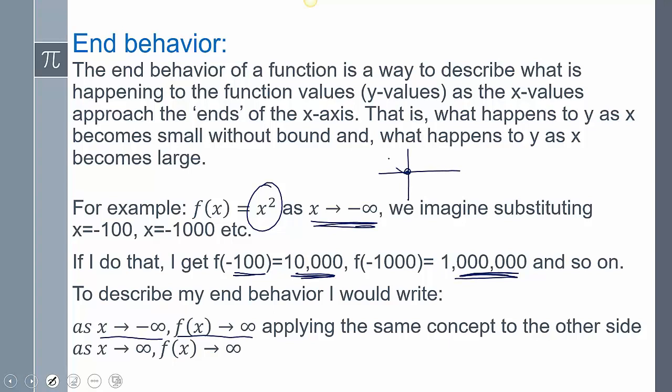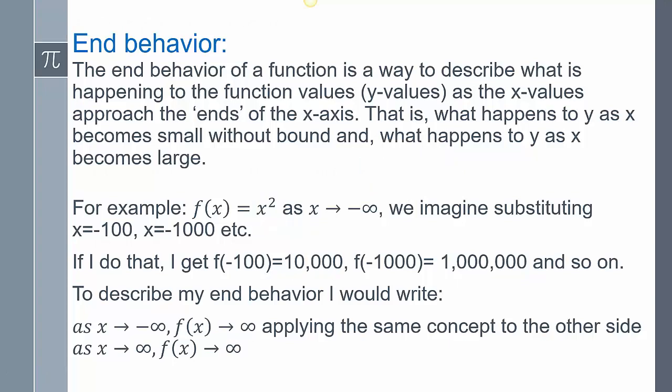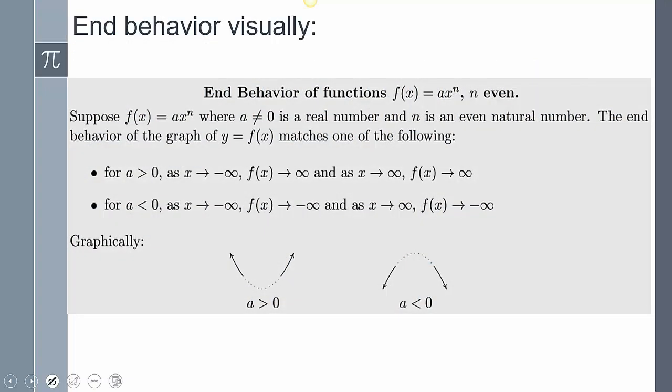Even if we wanted to visualize this — as x goes to negative infinity, my y goes to positive infinity. As x goes to positive infinity, my y is also going to go to positive infinity. We need to know this end behavior mainly because it allows us to make assumptions about the polynomial, and so it helps us sketch and graph it. There are going to be two things that we need to look at when it comes to end behavior.